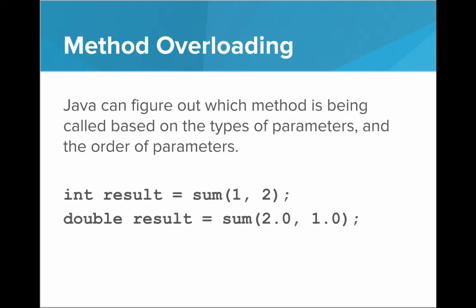So here, int result equals sum of one and two. Well, we're passing two ints, and we're expecting an int back, so this must be calling the sum that takes two ints. Here, double result equals sum of 2.0 and 1.0. Well, this is clearly calling the sum that takes two doubles.